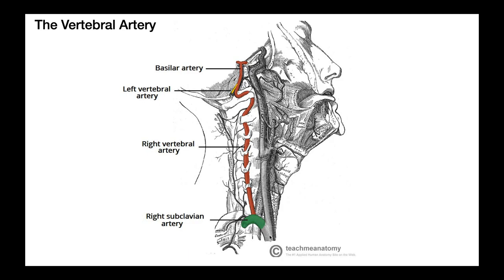On the right side, the subclavian comes from the brachiocephalic artery. On the left side, it's directly from the arch of the aorta. The vertebral artery is called such because it traverses right next to the cervical vertebrae. In fact, it actually goes through holes on either side of each cervical vertebra called transverse foramina — foramina is plural, foramen is singular.